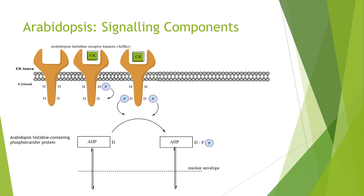There is then transfer of that phosphate to histidines on histidine-containing phosphotransfer proteins, or AHPs — the intermediary proteins of the phosphorelay. These AHPs are continually shuttled between the cytoplasm and the nucleus regardless of phosphorylation state. Overall, cytokinin activity leads to an increase in the proportion of AHPs that are in the nucleus in a phosphorylated state.